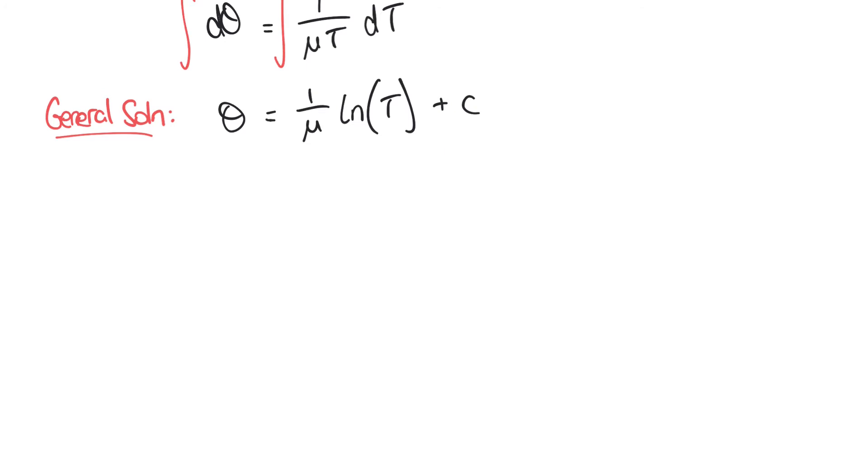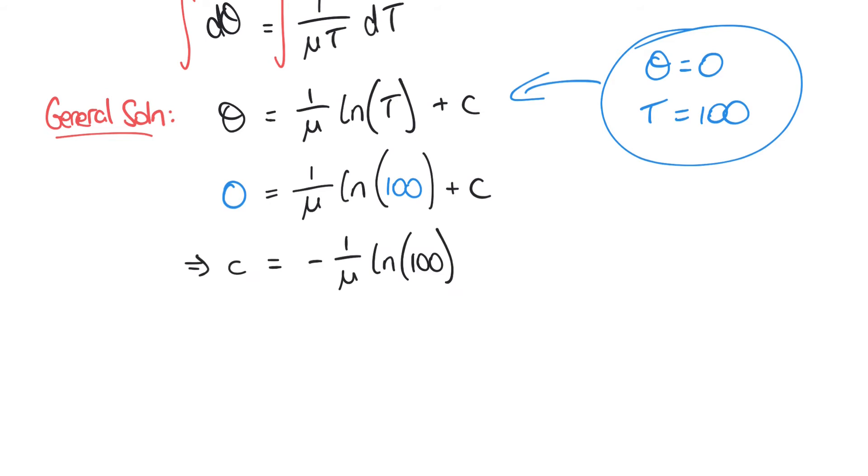And we can move to our particular solution by taking the initial values we were given at the start. We were told that when theta equals 0, T equals 100, 100 newtons. And so we could substitute these into our expression for theta and T respectively. So now we have 0 equals 1 over μ times the natural logarithm of 100 plus c. And subtracting our term from both sides here, we can rearrange to say that c is equal to minus 1 over μ times the natural logarithm of 100.